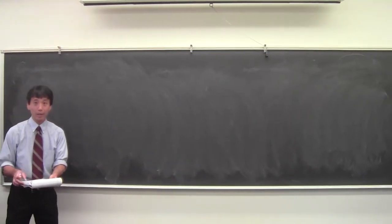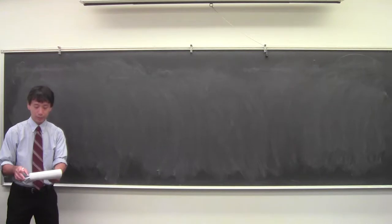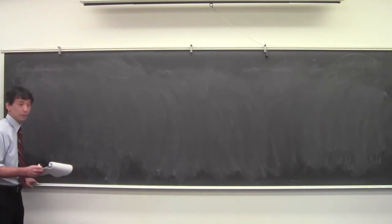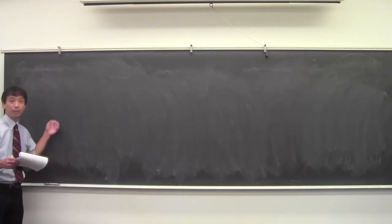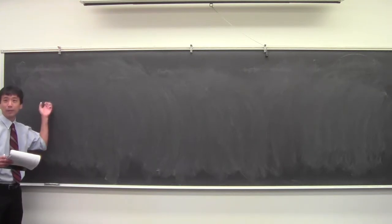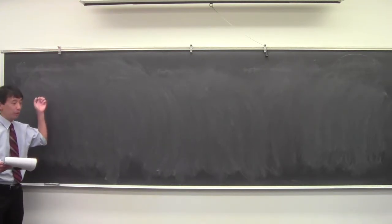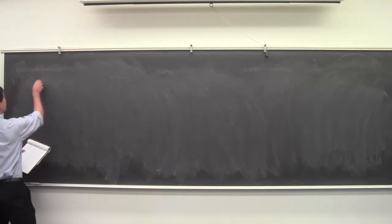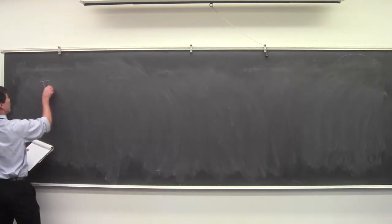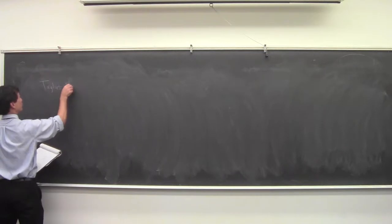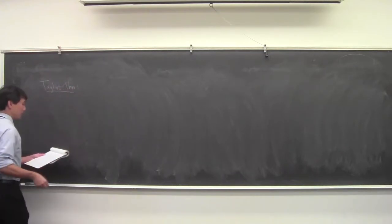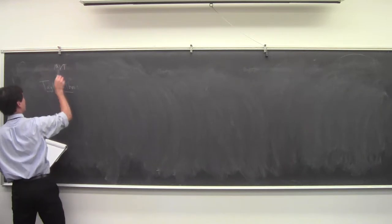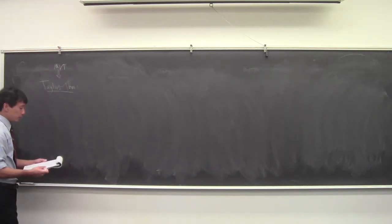The end of this section is a bunch of consequences of the theorems we've just gotten — Fermat's theorem, the generalized mean value theorem, the mean value theorem. So let's give the proof of Taylor's theorem, which is a consequence of the mean value theorem.